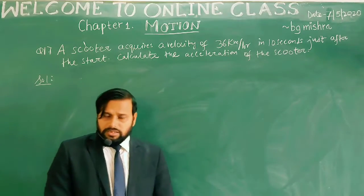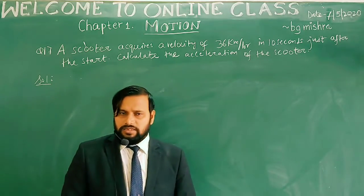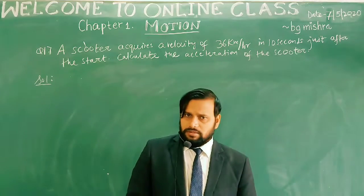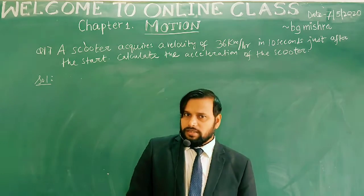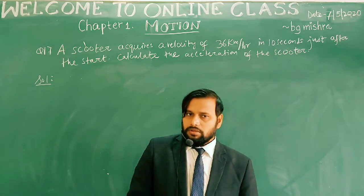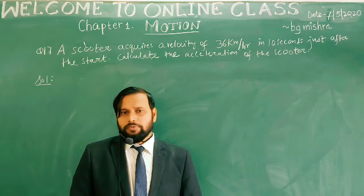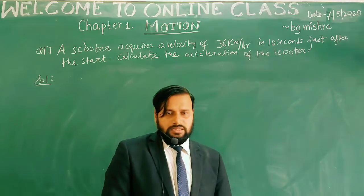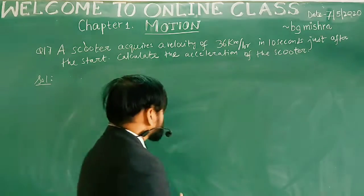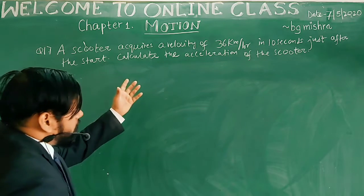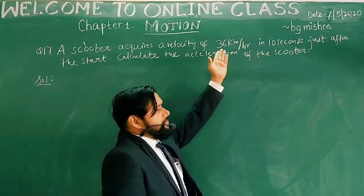We have to write the given part first. Then we have to see which formula we can use. Then we put all the given values into that formula and solve the equation. For example: a scooter attains a velocity of 36 kilometers per hour — that means a velocity is given.